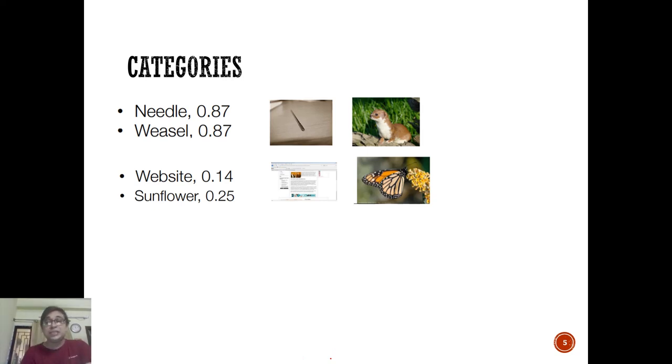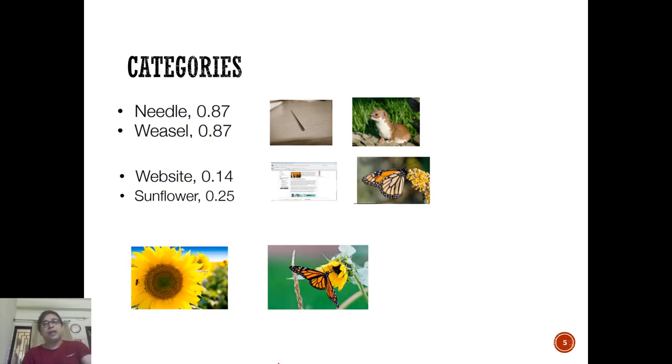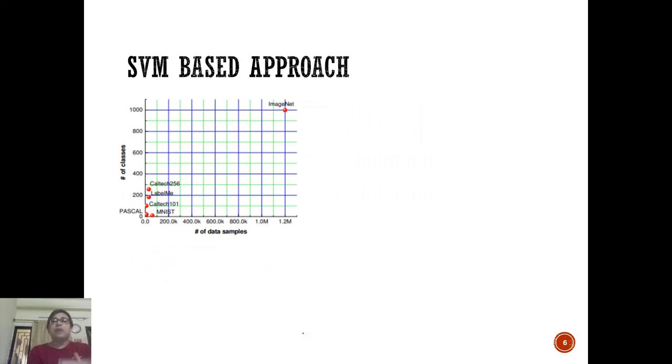When AlexNet was proposed and applied on this dataset, their top-5 error rate was 17 percent, quite a big improvement. Though LeNet5 came in 1998, it was taken with skepticism by the community - there wasn't wholehearted adoption. Now CNN is the gold standard, but it wasn't the case in 2010. Some more detail about this dataset: difficult categories were needle and whistle with top-5 error rate of 0.87.